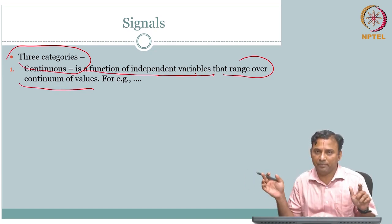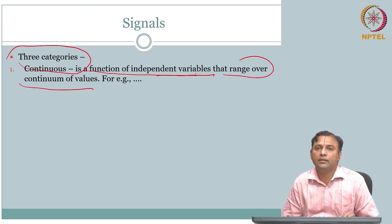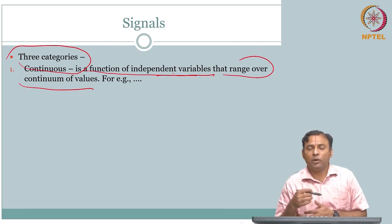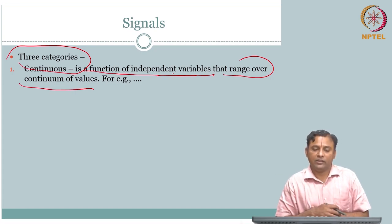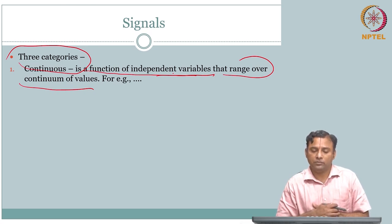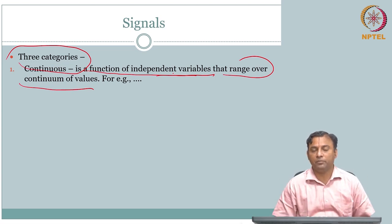A signal is nothing but a mathematical function of one or more independent variables. Somehow that signal can be used as a mathematical form — it is a model that better represents or corresponds to something physical. That is when it becomes interesting. So a signal is a mathematical function of one or more independent variables. What are the different categories that we can broadly classify these signals into? Think before I say — there are three categories.